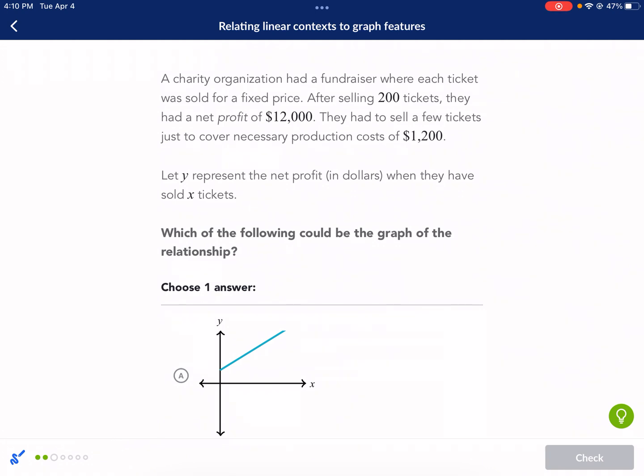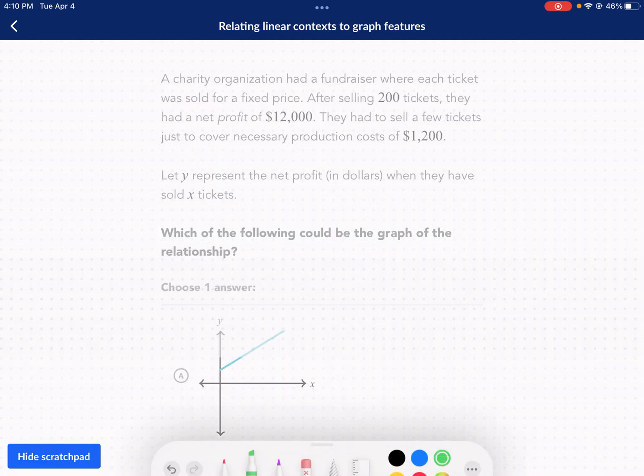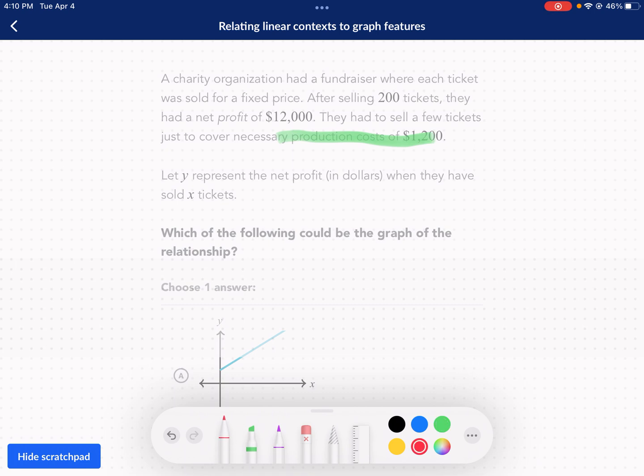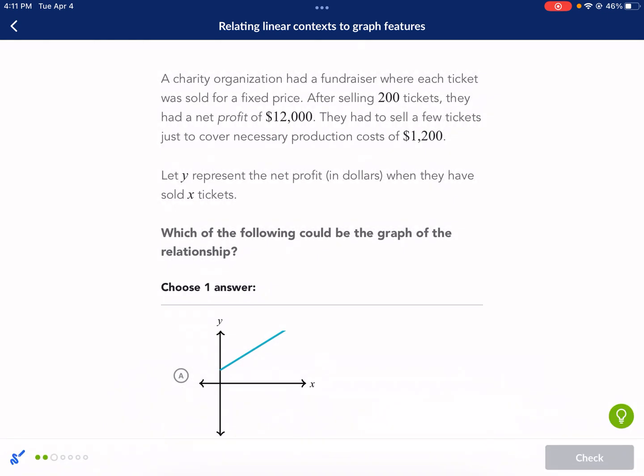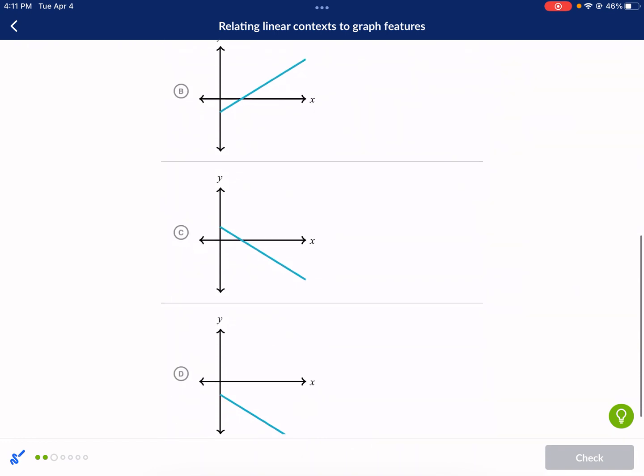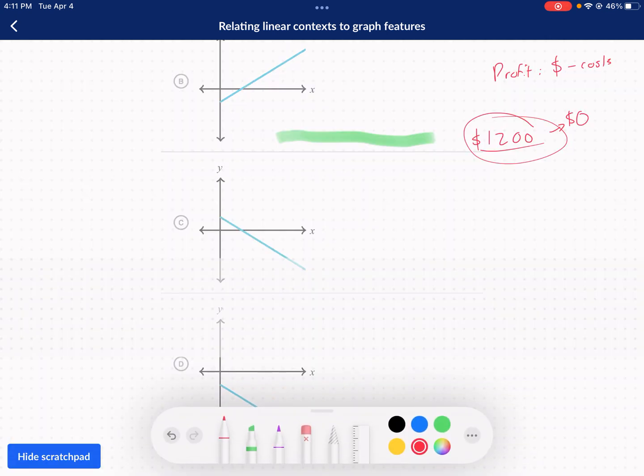A charity organization had a fundraiser where each ticket was sold for a fixed price. After selling 200 tickets, they had a net profit of $12,000. They had to sell a few tickets just to cover necessary production costs of $1,200. Let y represent the net profit where they have sold X tickets. Which of the following could be the graph of this relationship? Key piece of information here, they said they had to sell tickets to cover production costs. So that means when they made $1,200, they sold this much in tickets, they had $0 profit.